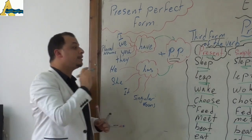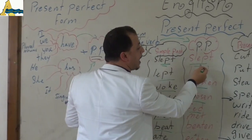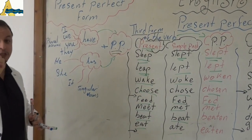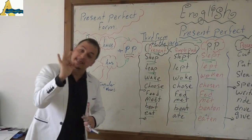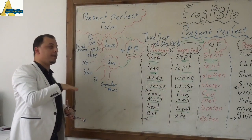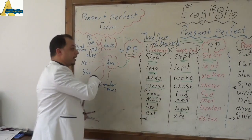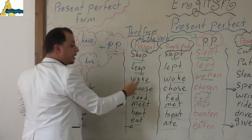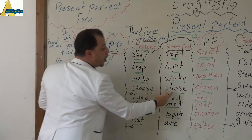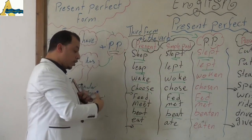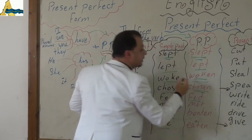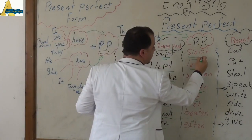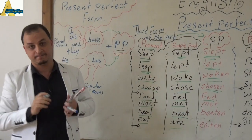Let's go to the verbs we call the past participle — the third form of the verb. Like we have the first form, the second form, and the third form. We have: sleep, slept, slept. Leap, leapt, leapt. Wake, woke, woken. Choose, chose, chosen — so 'chosen' is the third one. Leapt is the last one and the one we use in the present perfect.